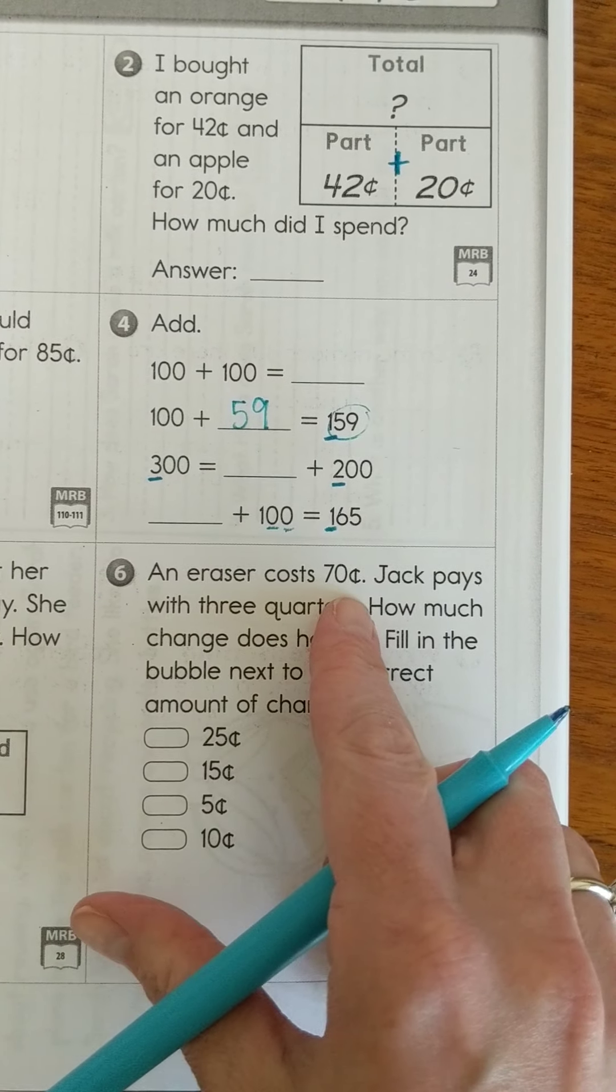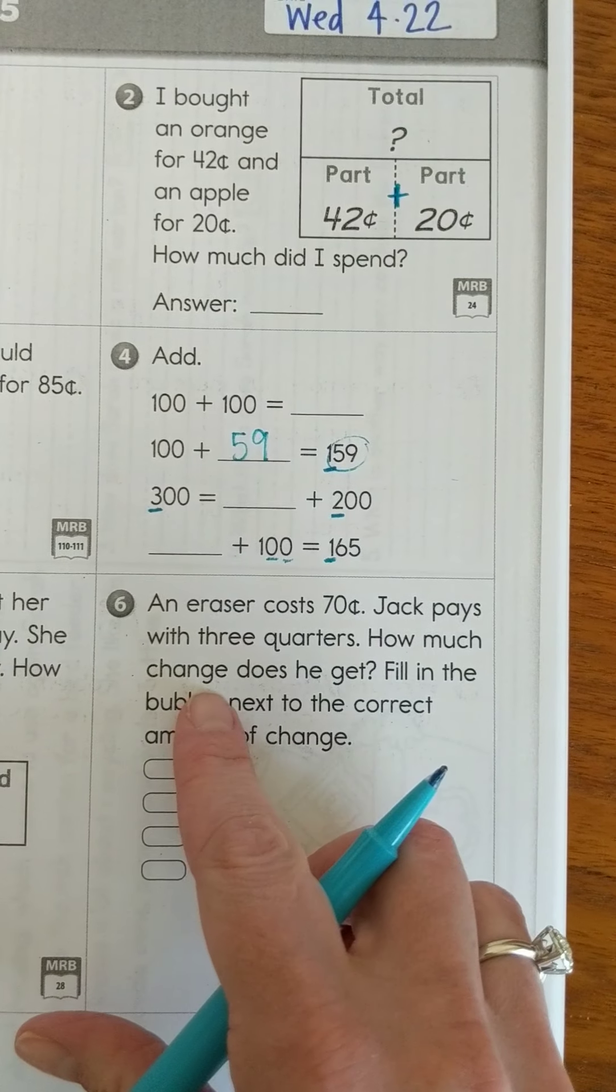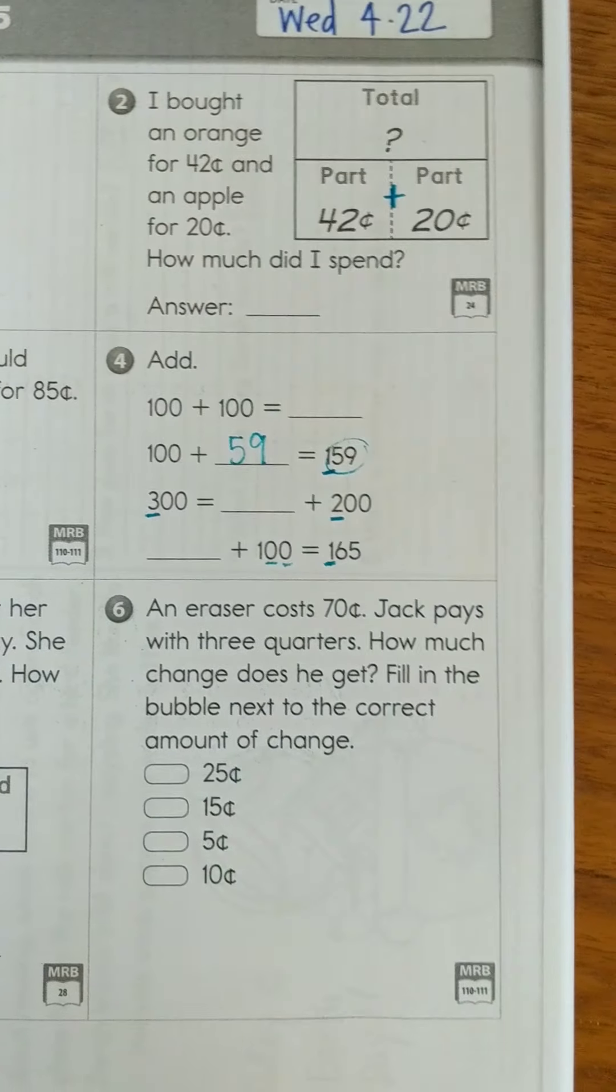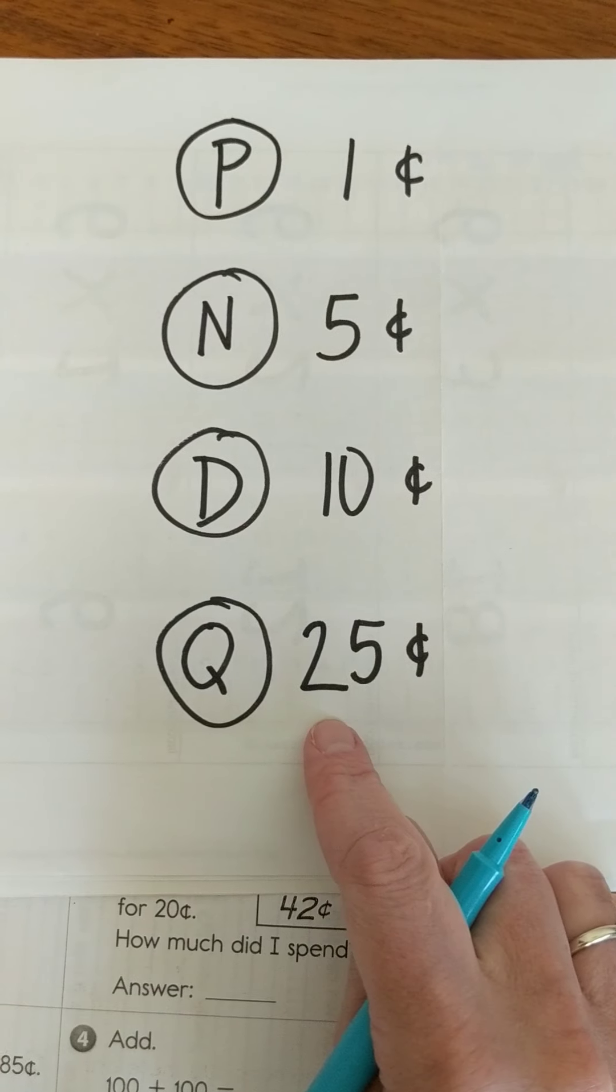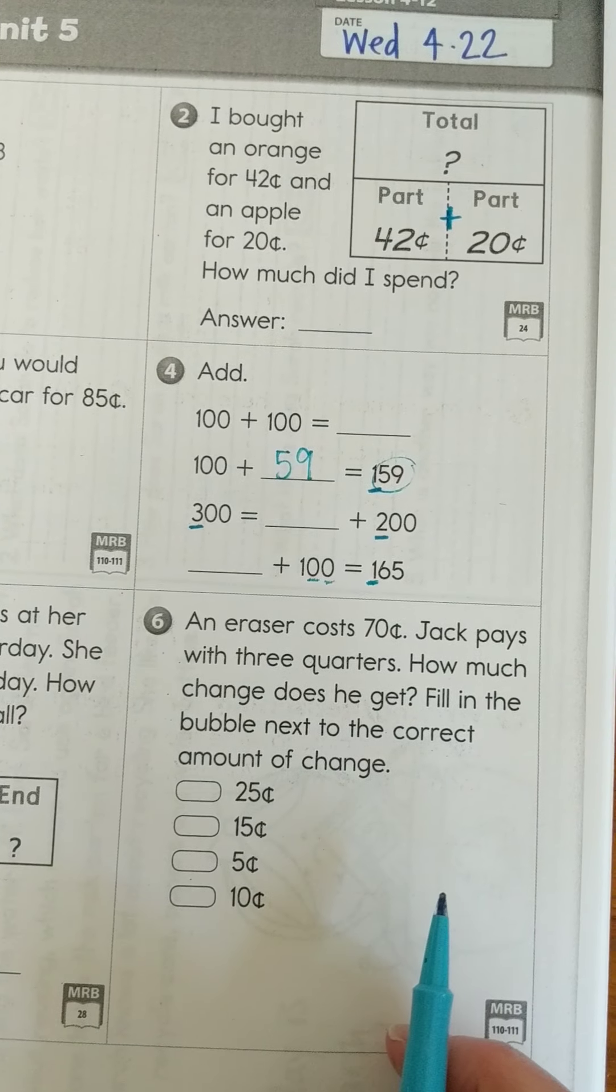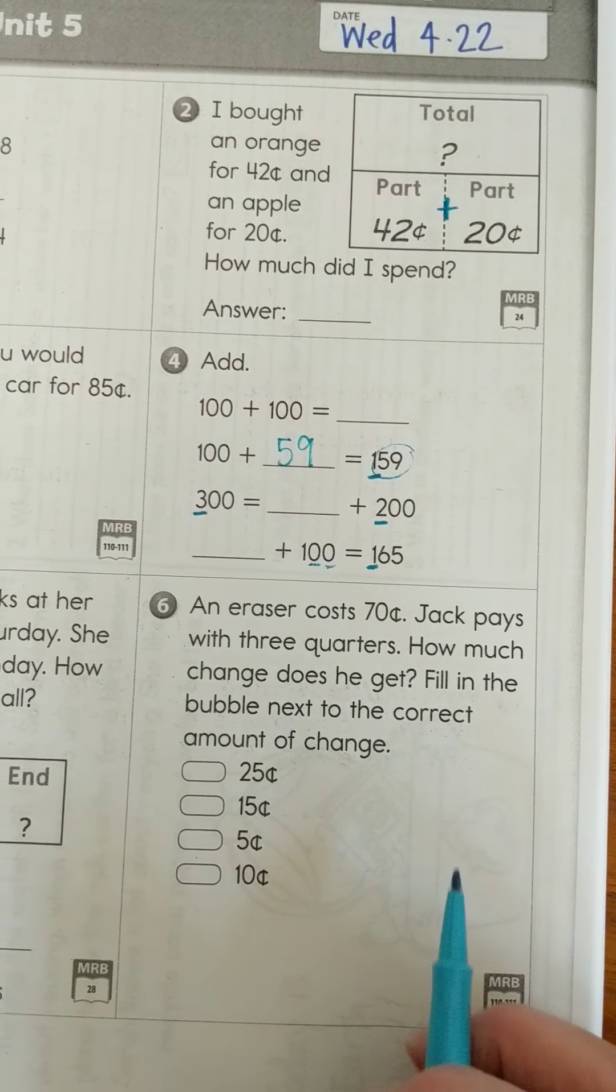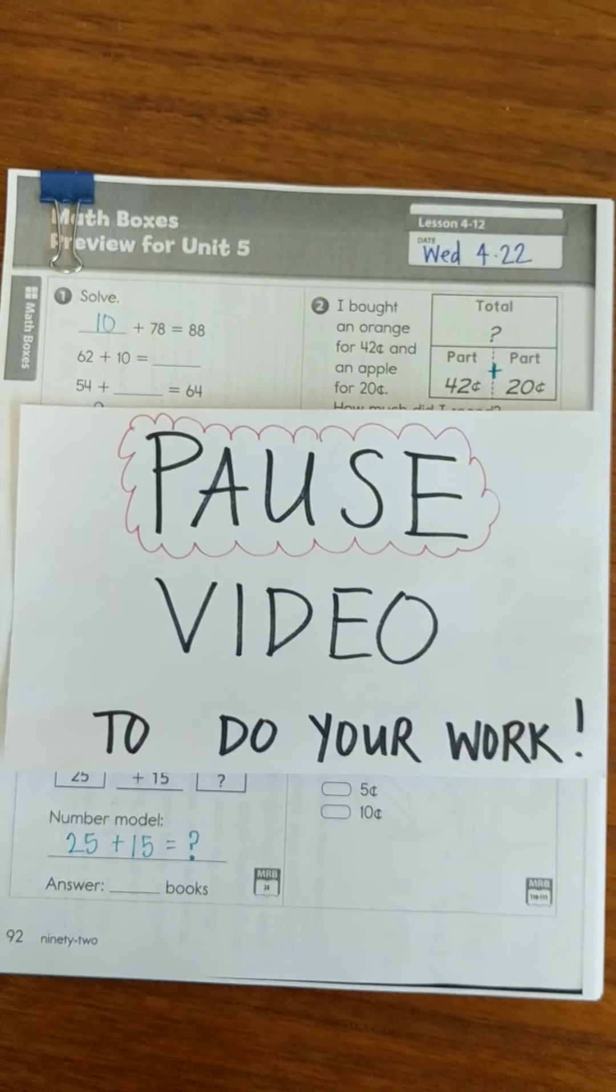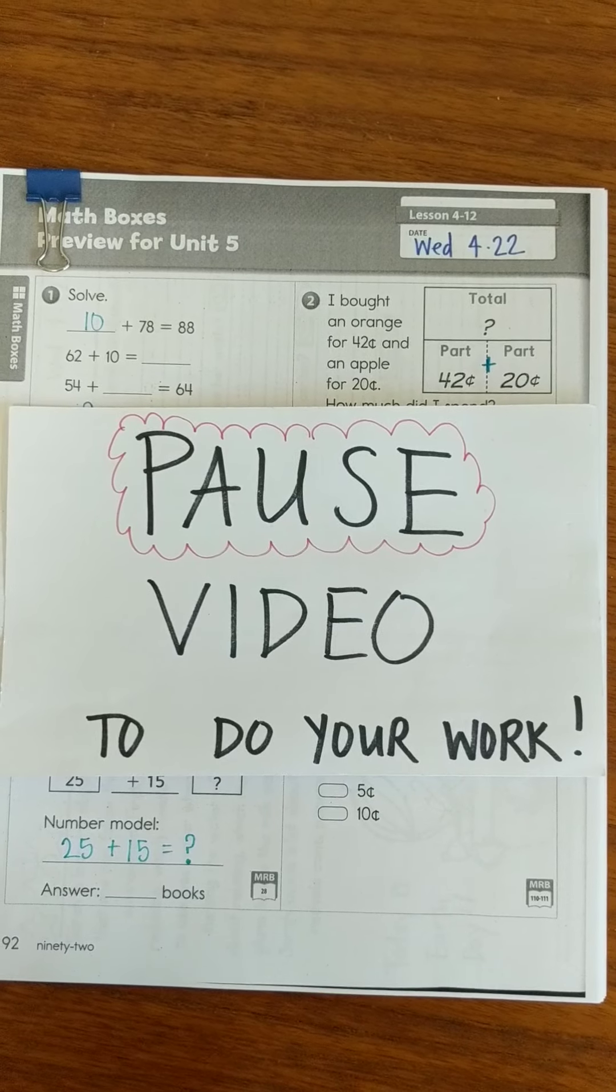Then an eraser costs 70 cents. Jack pays with three quarters. How much change does he get? Fill in the bubble next to the correct amount of change. If we look at our little cheat sheet, quarters are 25 cents. So he paid with three quarters. How much is that? But the eraser costs 70 cents. So how much more did he pay that he would get back in change? I'm going to have you go ahead and pause the video to do your work. If there's anything you're not sure of, go ahead and wait and you can fill it in when we do it together.